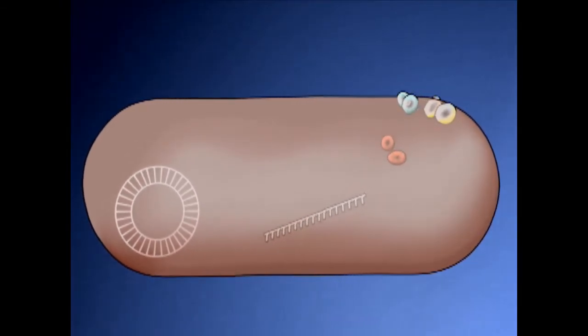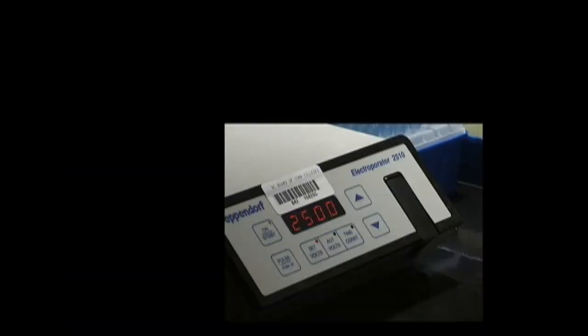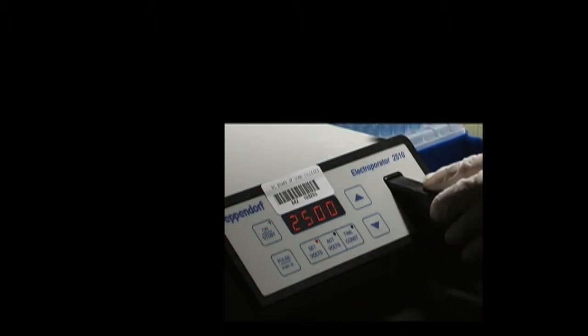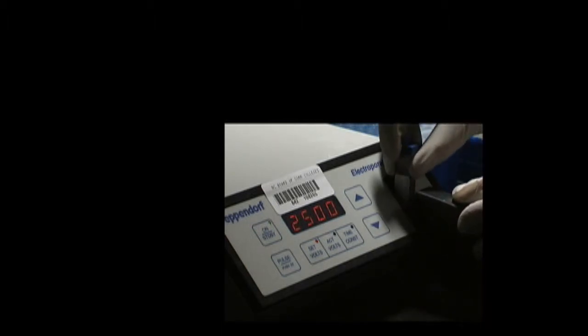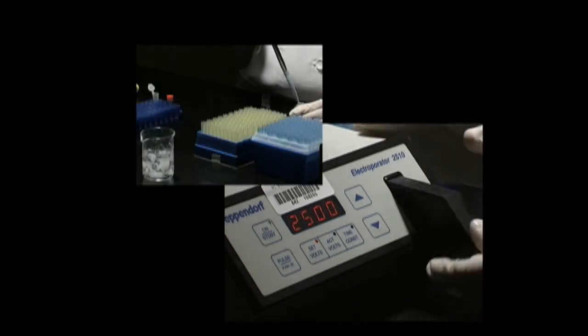Most E. coli cells are not naturally competent, so for this experiment, they must be forced into competency. One way to do this is through electroporation, the application of an electric charge to weaken the cell membrane.